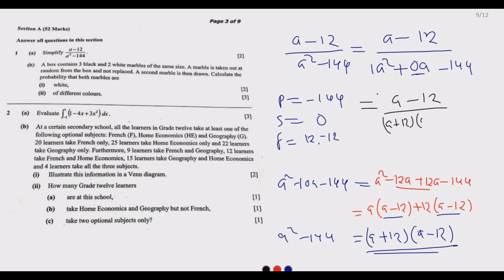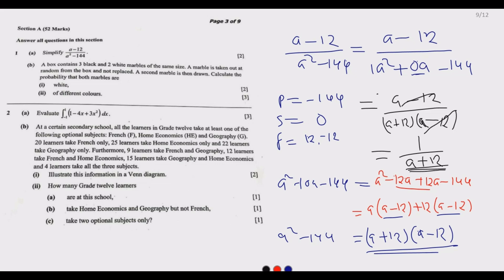We can now simplify (a minus 12) over (a plus 12)(a minus 12). The (a minus 12) terms cancel, and we end up with 1 over (a plus 12) as our final answer, earning us 2 marks.